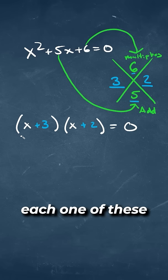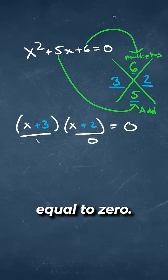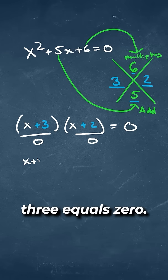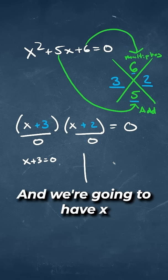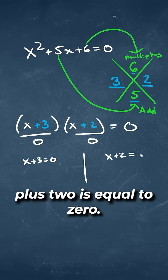To solve for x, we're going to set each one of these equal to 0. So we would have x plus 3 equals 0, and we're going to have x plus 2 is equal to 0.